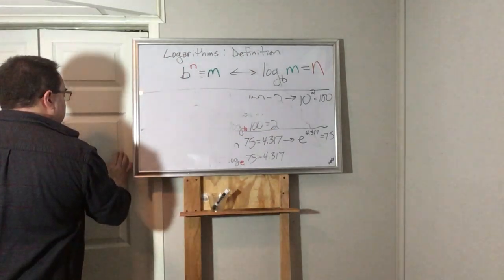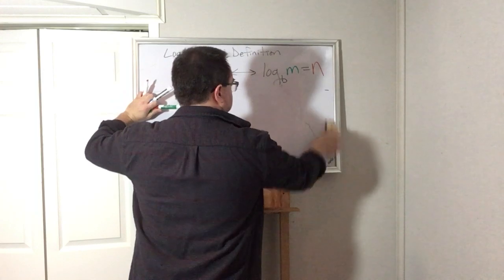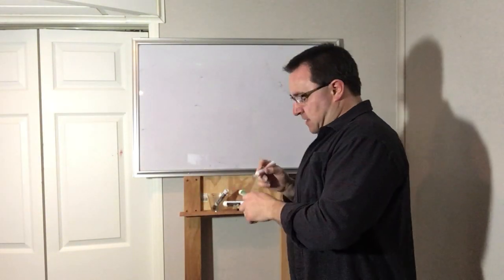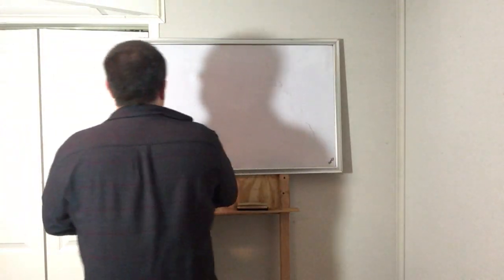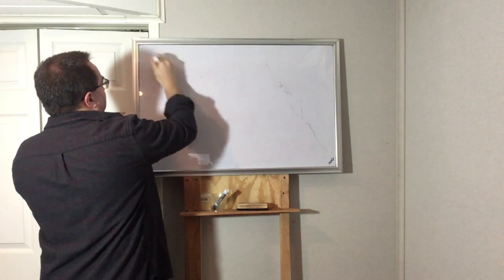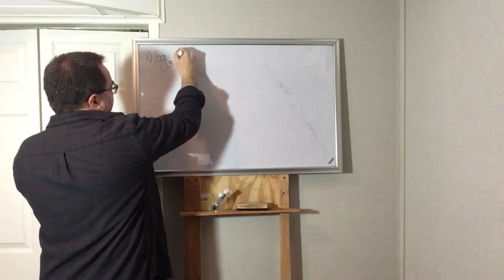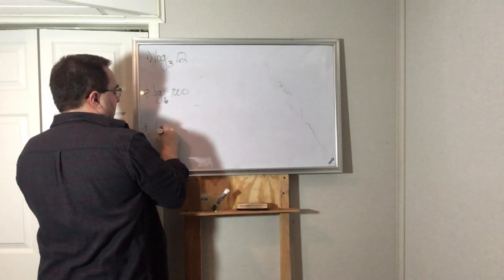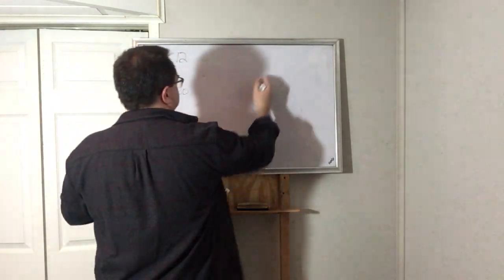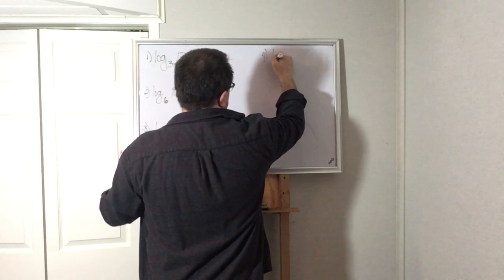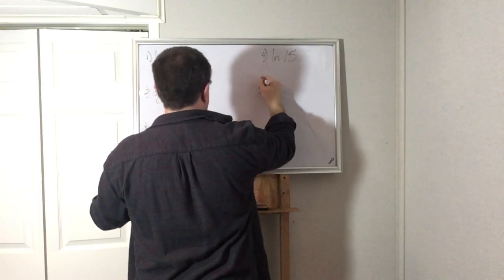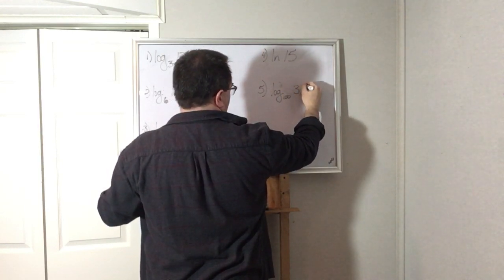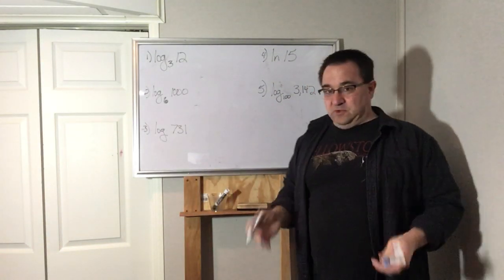Now, oops, I just wrote on my wall. We'll have to erase that later. Yeah, you can see that there. So let's say I have some problems that I want to know the answer to. Log base 3 of 12, log base 6 of 1000, log of 731, LN of 15, log base 100 of 3,142. Just pick something random. So what I want to know is what are these equal to?